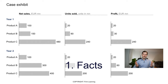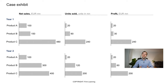Let's start with the lowest quality level — just restating the facts. If you look at a slide like this, you see lots of facts: in year one, product A had net sales of 100 million euro, 20 million units were sold, and the company made a profit of 20 million. Some candidates will just read out things that you can clearly read on the slide anyway. This is really stating the obvious — not the best answer.